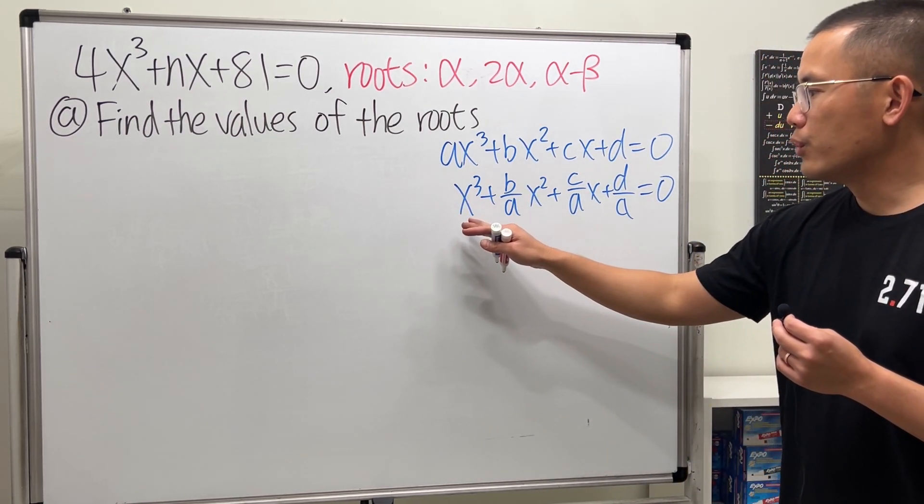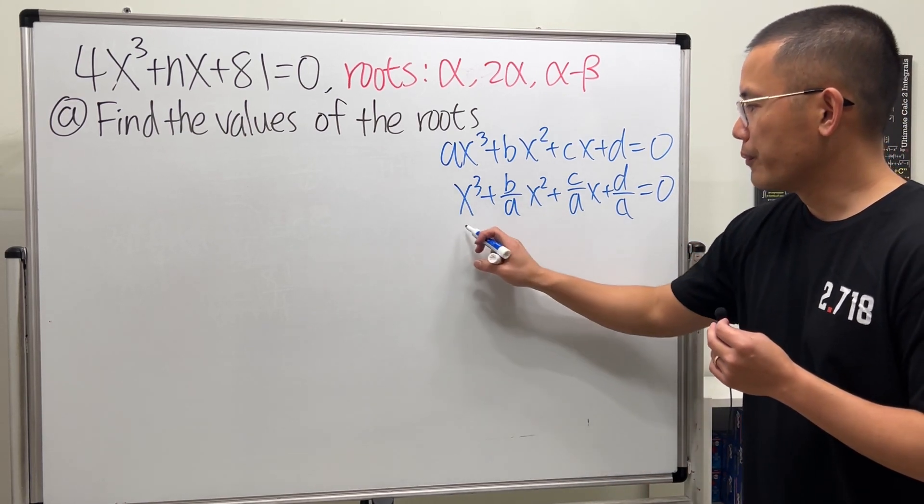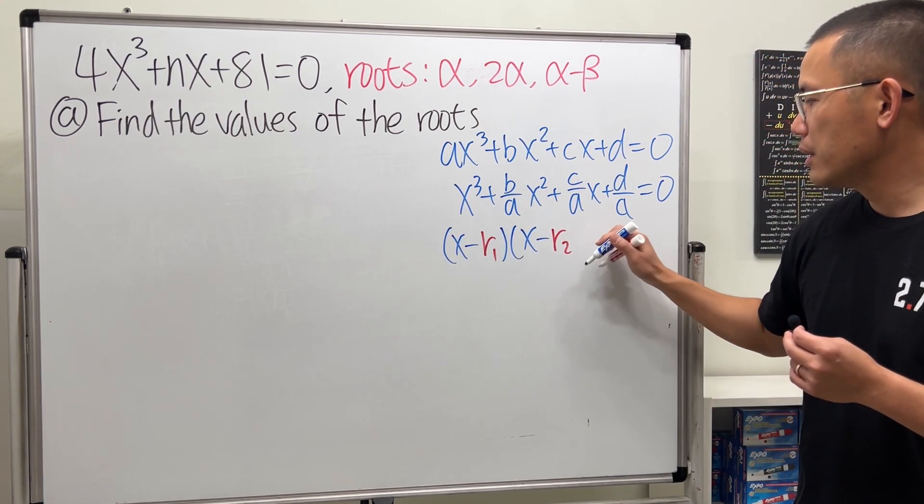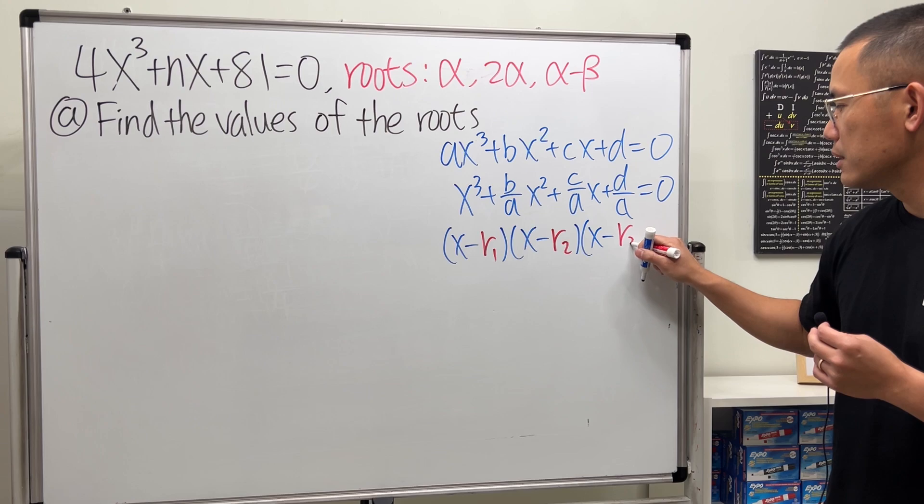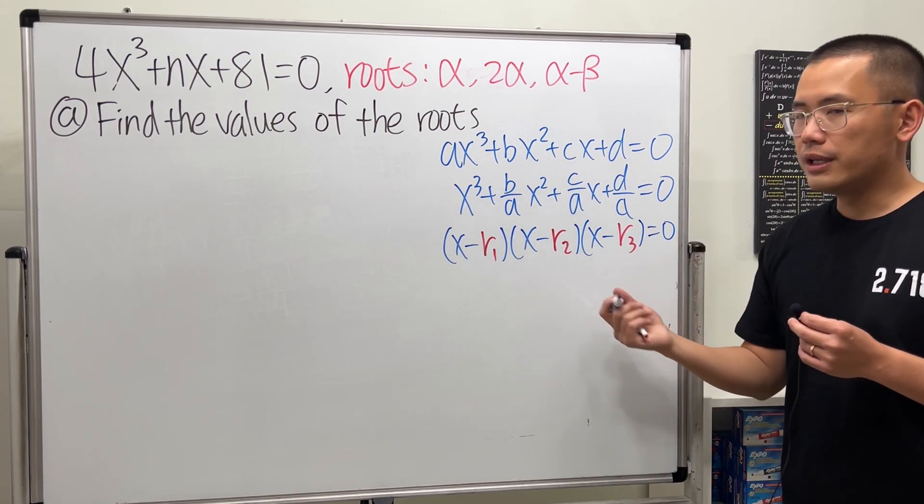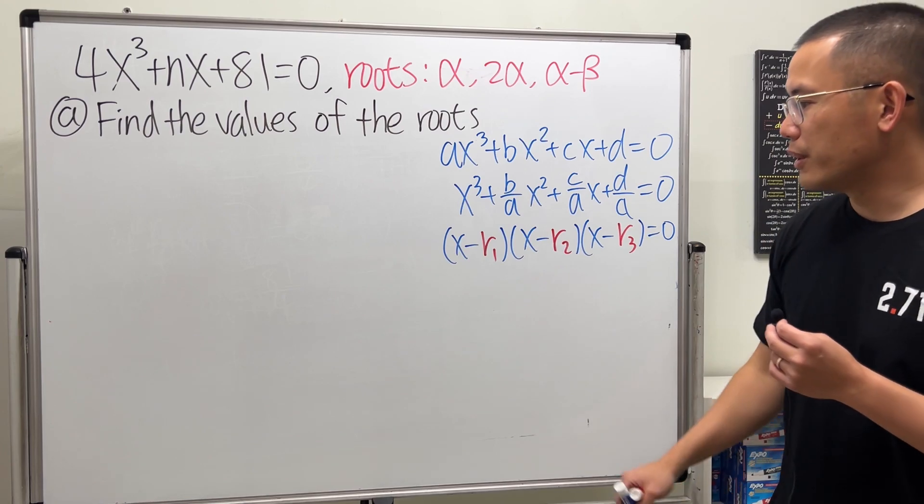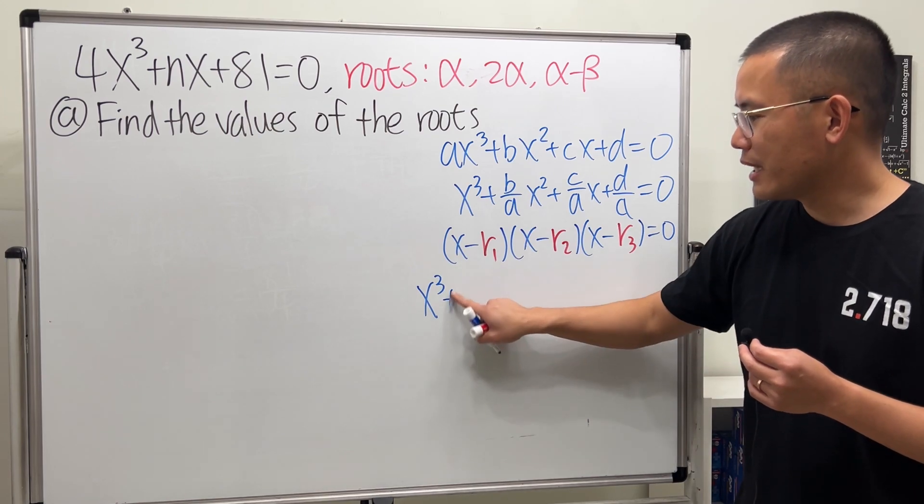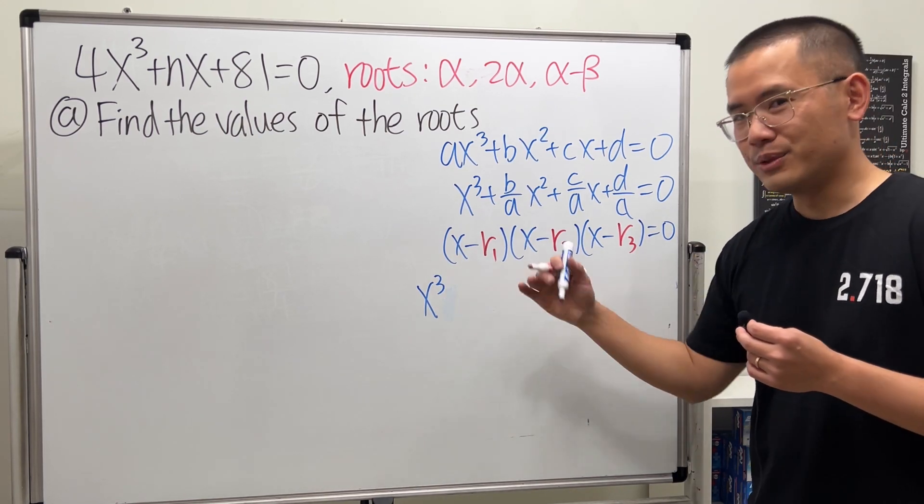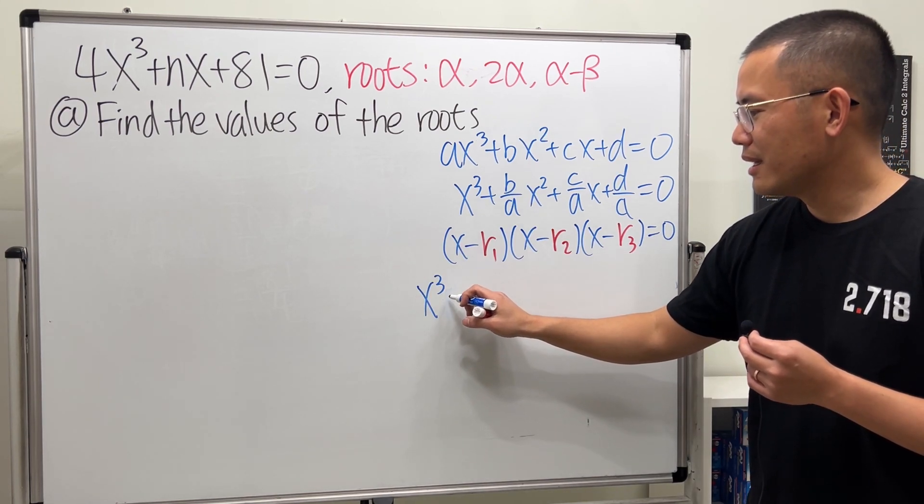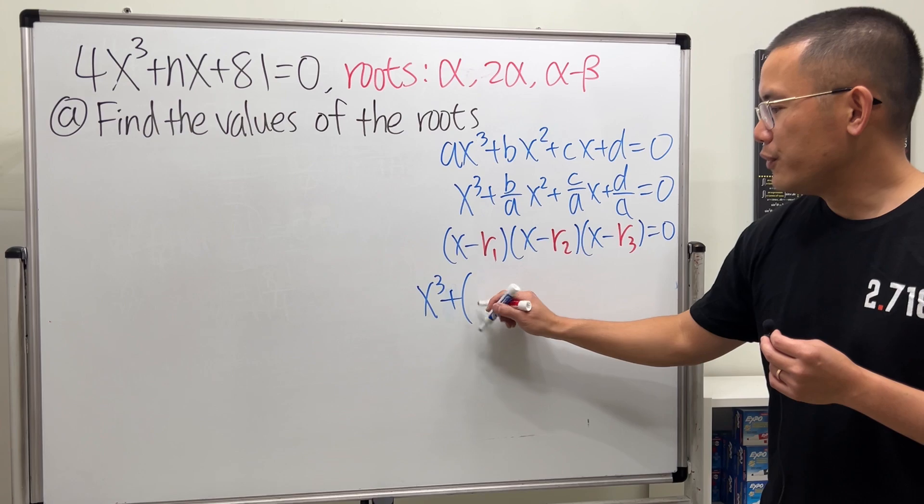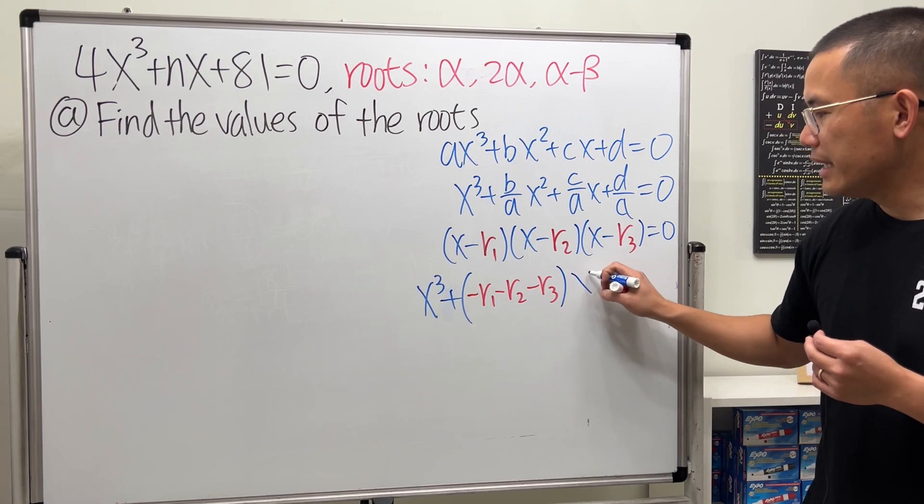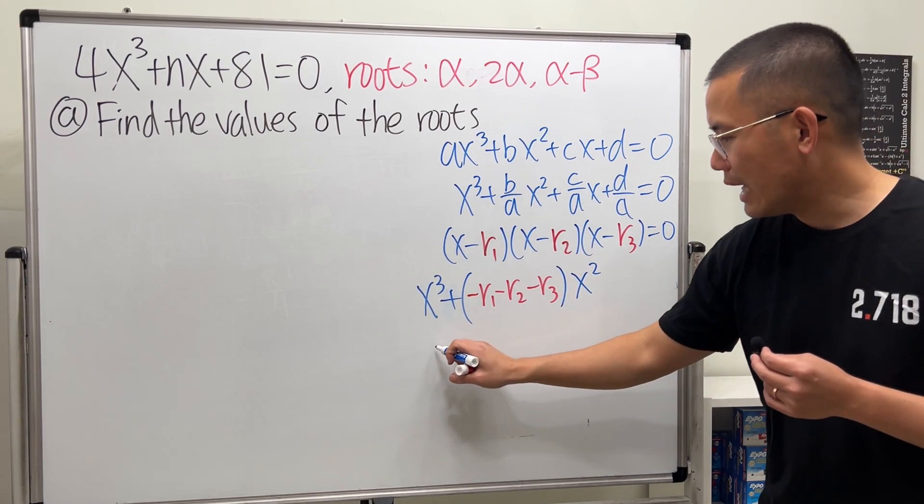All right, now we have the standard form with the leading coefficient equal to 1. Now imagine if you factor it, and then you get the three roots. So I will put down (x - r1)(x - r2)(x - r3). And now if you expand it, well, I will tell you this is how I remember it. You have x^3, and then you add, well, depends on how you want to look at it. This is a little bit, you know, negative positive signs, not the nicest thing. I'm going to put that you add, if you have negative r1 - r2 - r3, and then x^2.